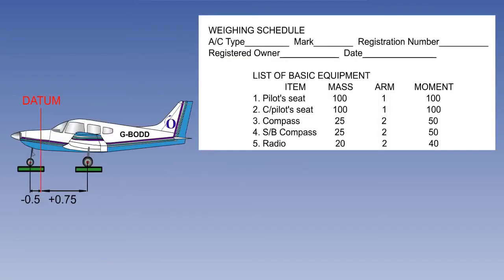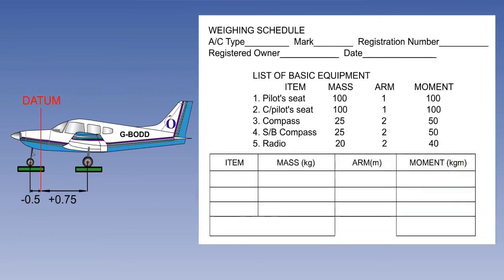Now we can look at a simple weighing schedule for a light aeroplane. The aeroplane is placed on weighbridge scales and the individual mass is read at each wheel. Notice the position of the datum and the arm relative to the nose and main wheels. The list of basic equipment must be checked and fitted in the aeroplane prior to weighing. A table is constructed in columns indicating item, mass, arm and moment.